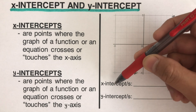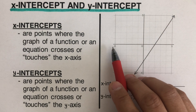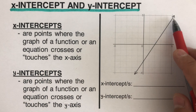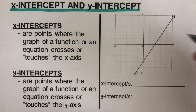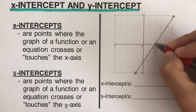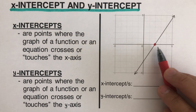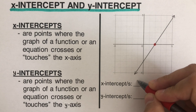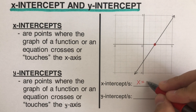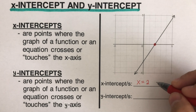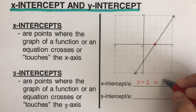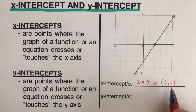Let's take the first example and determine the x-intercept. We're looking at the x-axis to find where the line crosses or touches it — that point is our x-intercept. We can write the x-intercept as x equals 2, or in coordinate form as (2, 0). As you can see, the x-intercept is the value of x when y is zero.